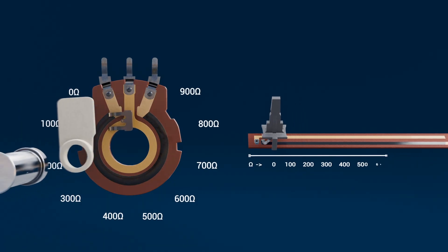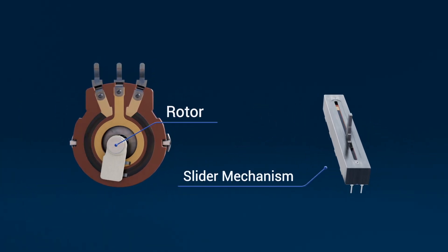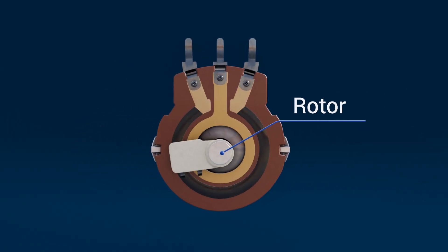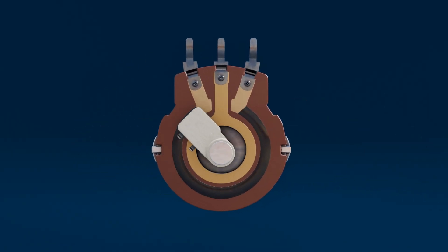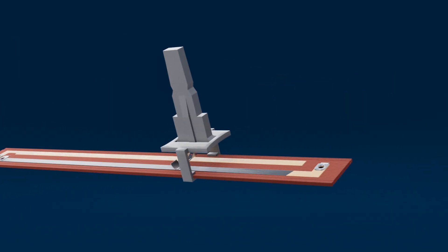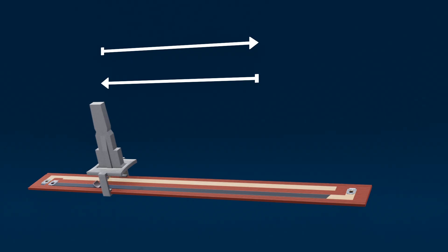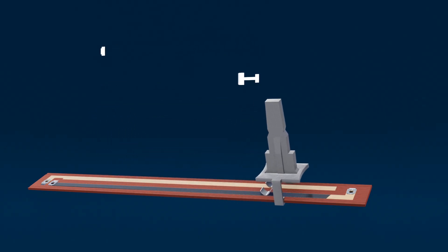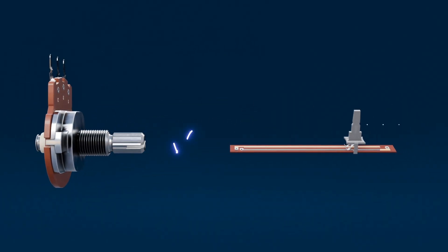To make that movement possible, there's a rotor or slider mechanism. In a rotary potentiometer, the wiper is attached to a rotating shaft. In a slide pot, it's fixed to a straight mechanical carriage that moves back and forth. This is the part you actually interact with, the knob you twist or the slider you push.